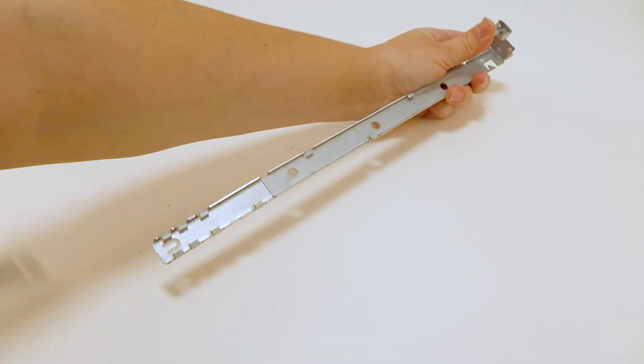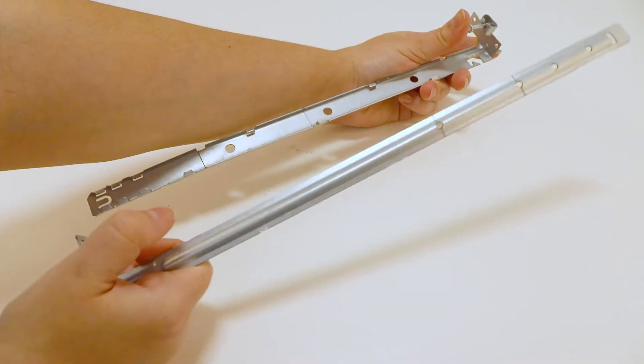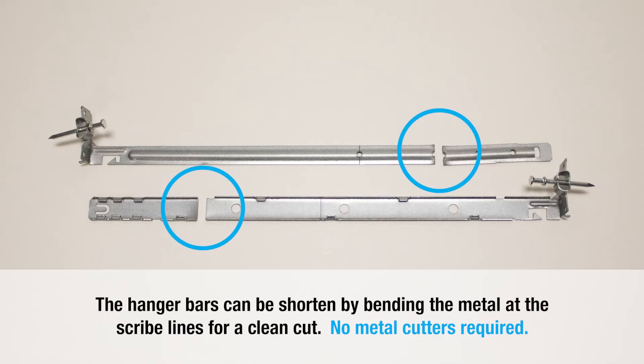Locate the predetermined position for the fixture to be installed. If hanger bars are too long to fit between the supports, they can be further shortened by sliding them out and cutting the excess.